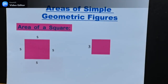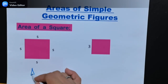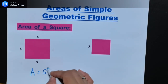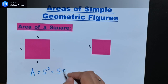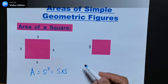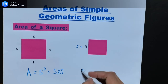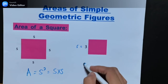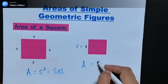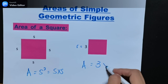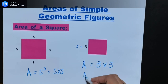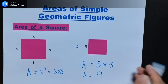Next, area. Area of a square: the area of a square is S squared, or S times S. From the example, the side is 3. So the area is 3 times 3, which equals 9.